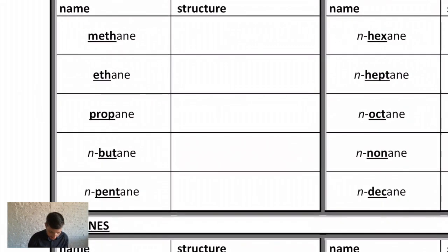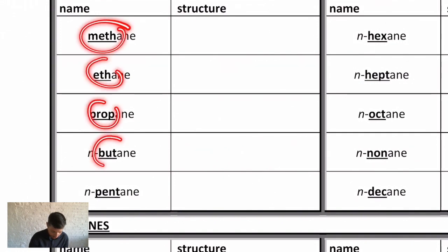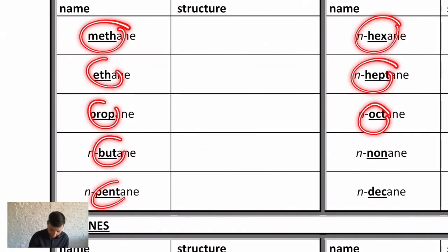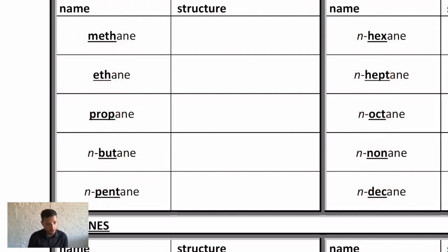Every chemist should know that the number of carbons is denoted by a prefix: meth, eth, prop, but, pent, hex, hept, oct, non, and dec for one through ten. You should know those ten prefixes. There are prefixes for other carbon counts—undecane is 11, dodecane is 12, icosane is 20—but let's just stick with the first ten for now.